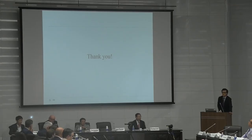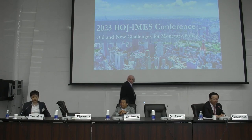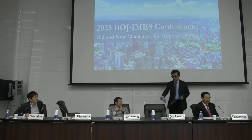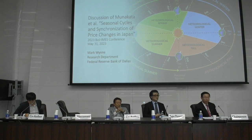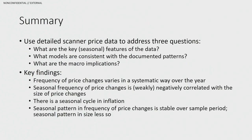Thank you. The discussant then takes the floor. Thank you for the opportunity to discuss this really interesting paper. I'm going to try to be very brief. This paper is a really interesting analysis using highly disaggregated 13-digit scanner data from Nikkei, documenting the timing and size of price changes in nearly 600 stores across Japan. They look at three questions: first, what are the seasonal patterns in the data? Second, what models of price adjustment are most consistent with the observed patterns? And third, what are the potential macroeconomic implications?